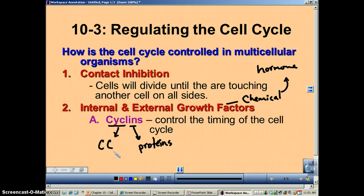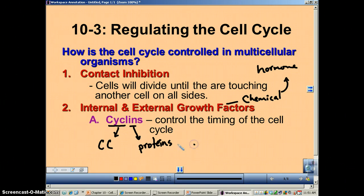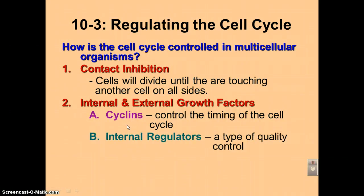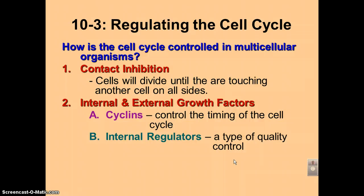For example, there will be a cyclin that signals you need to move from the G1 phase of interphase into the S phase, and another cyclin that says you may now move from the S phase into the G2 phase. Cyclins are a type of internal regulator used for quality control — you're not allowed to move to the next step until the cell's work has been checked to confirm everything in G1 is complete, then you can move to S phase, and so on into G2.